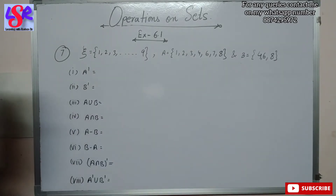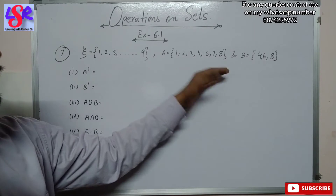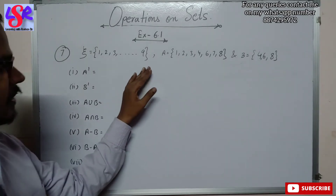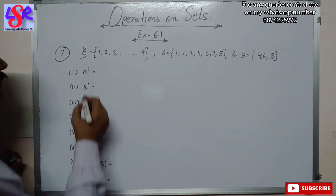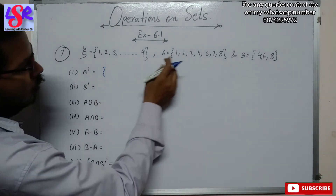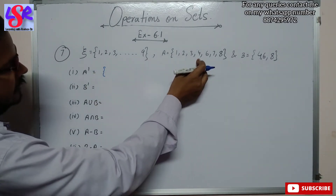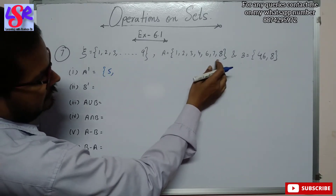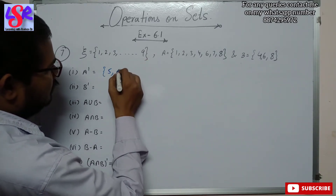Now we have to find A complement. A complement means we have to write all the numbers which are not in set A but are there in the universal set. So we are having 5 — since 1, 2, 3, 4 are already there — and 9 — since 6, 7, 8 are already there.